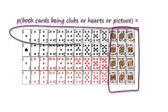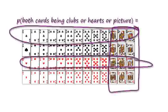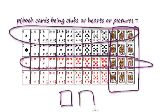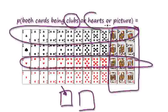Picture cards are these cards here. Clubs are these here. Hearts are these here. So we're going to pick out two cards at random. What is the probability that both of these cards will be clubs, hearts, or picture cards?